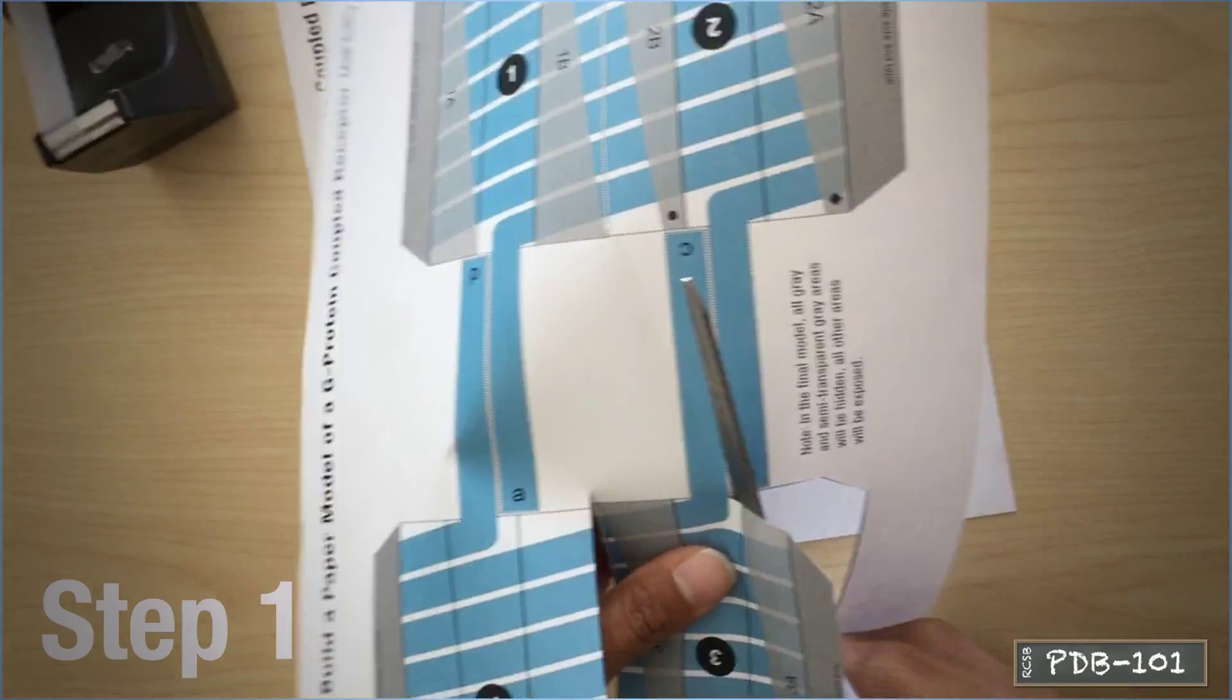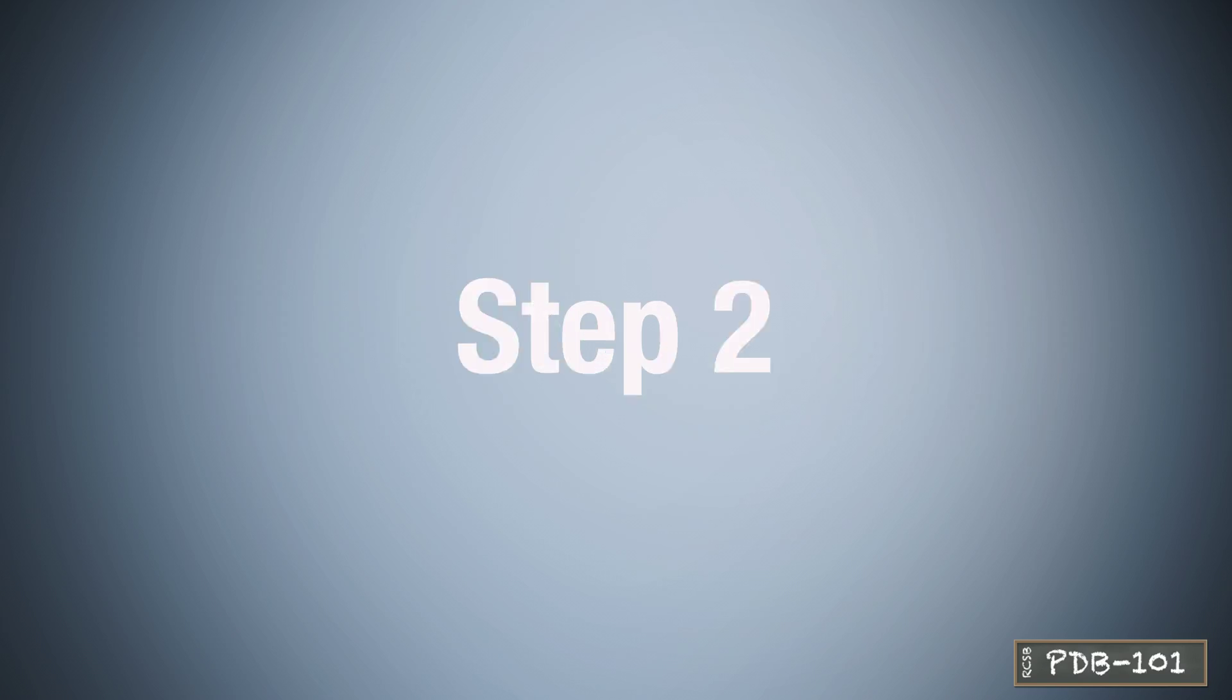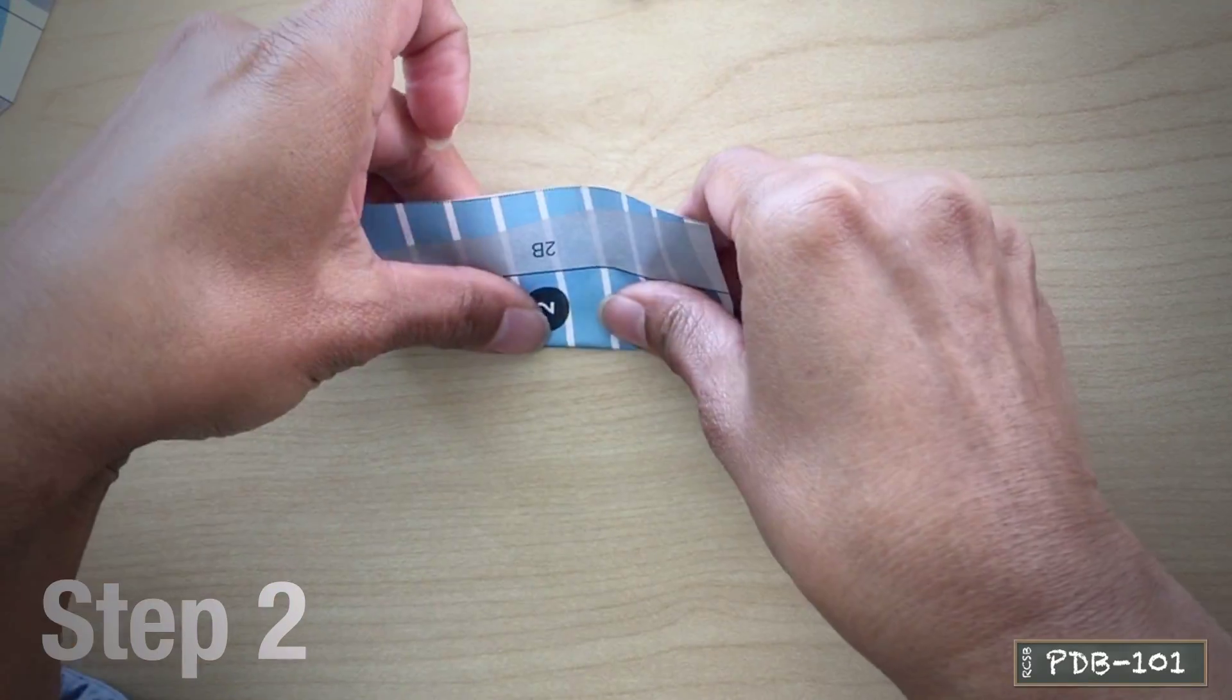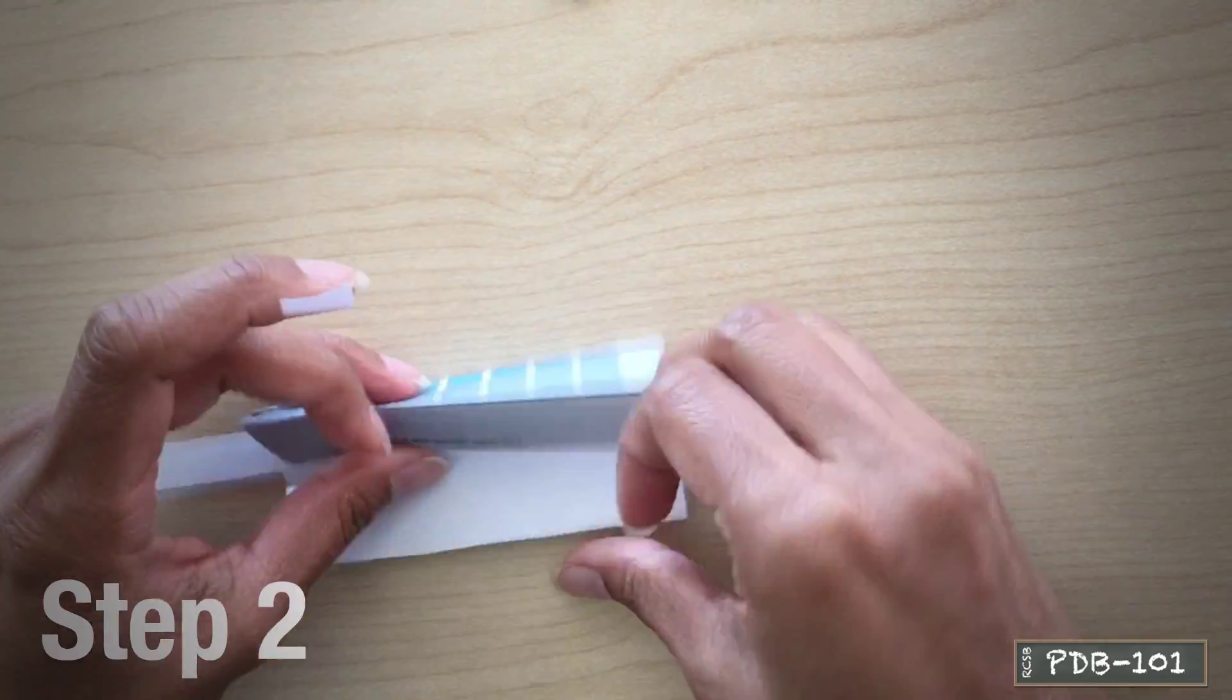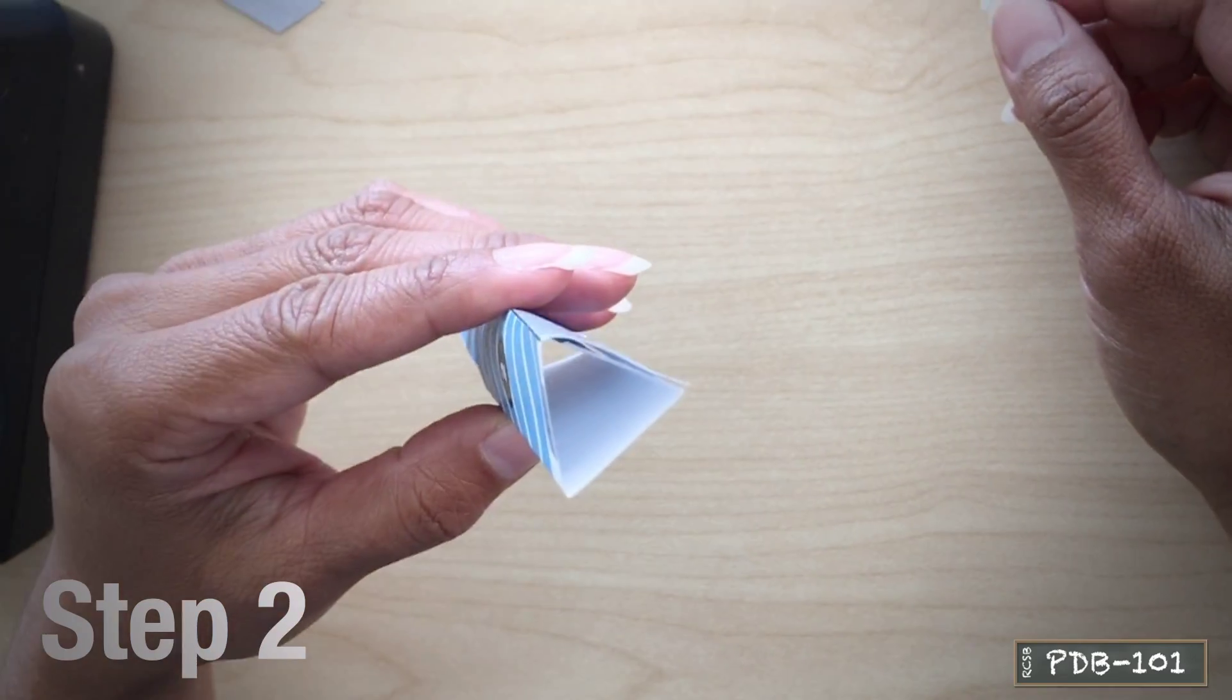Cut the seven paddle-shaped pieces along the dotted lines. Create the alpha helices numbered one through seven. For each helix, fold along the solid lines to create a triangular prism. Hide the dark gray flap inside.